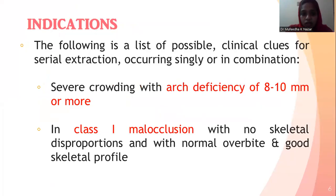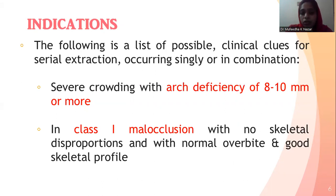Indications for Serial Extraction: The following is the list of possible clinical clues for serial extraction. These indications can occur singly or in combination. The most important indication for serial extraction is severe crowding — that is, crowding because of arch length tooth material discrepancy — and that arch deficiency should be of 8 to 10 mm or more.